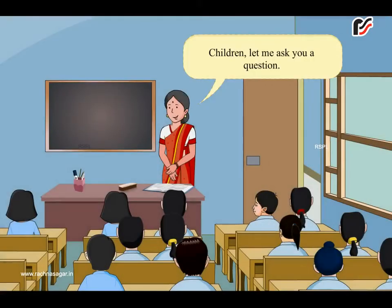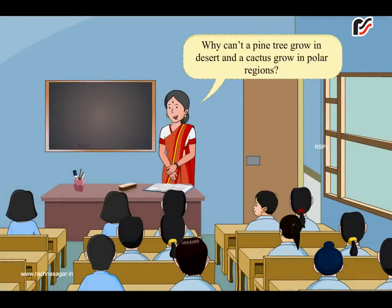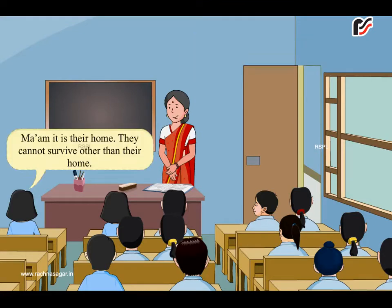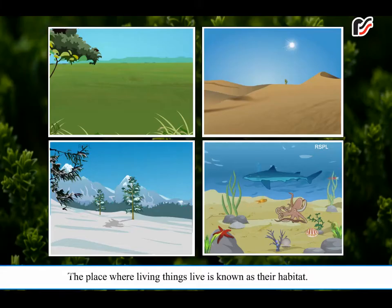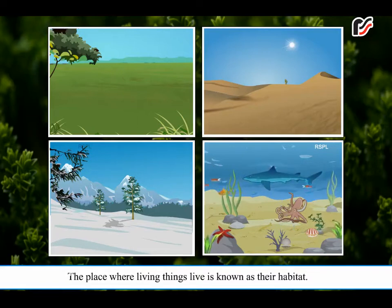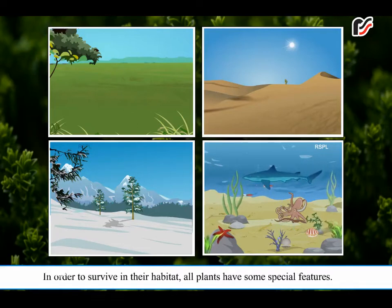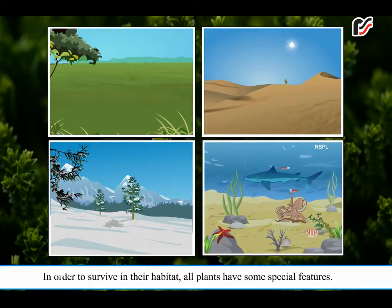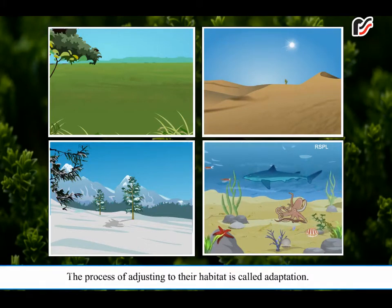Children, let me ask you a question. Why can't a pine tree grow in a desert and a cactus grow in polar regions? The place where living things live is known as their habitat. In order to survive in their habitat, all plants have some special features. The process of adjusting to their habitat is called adaptation.